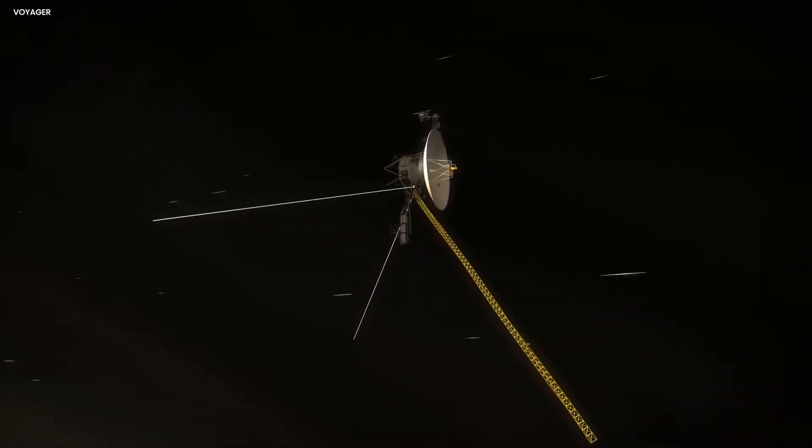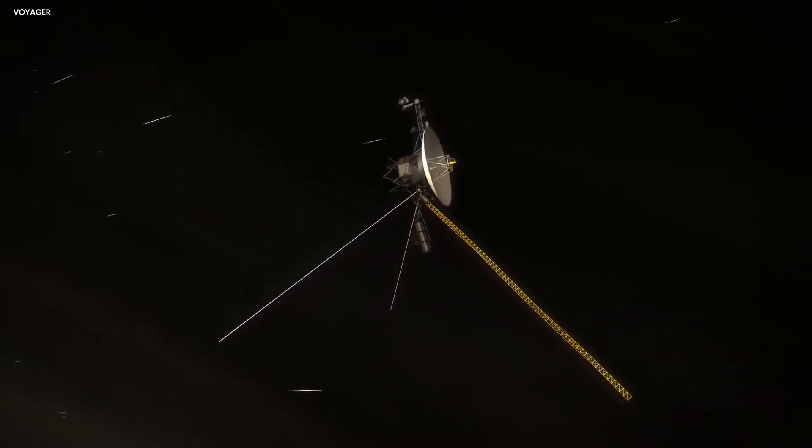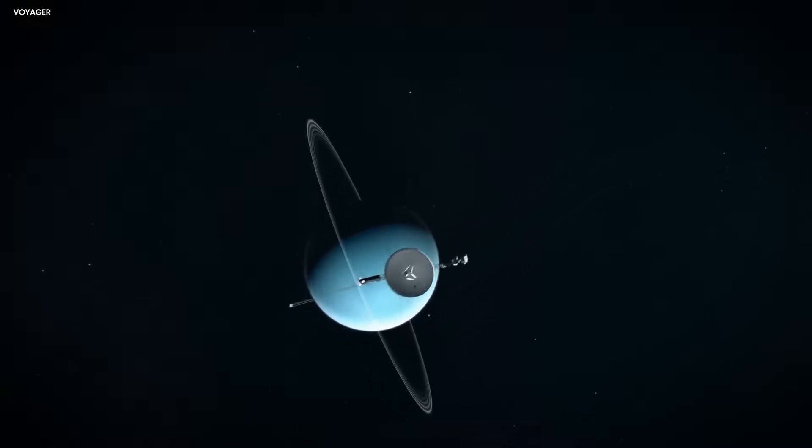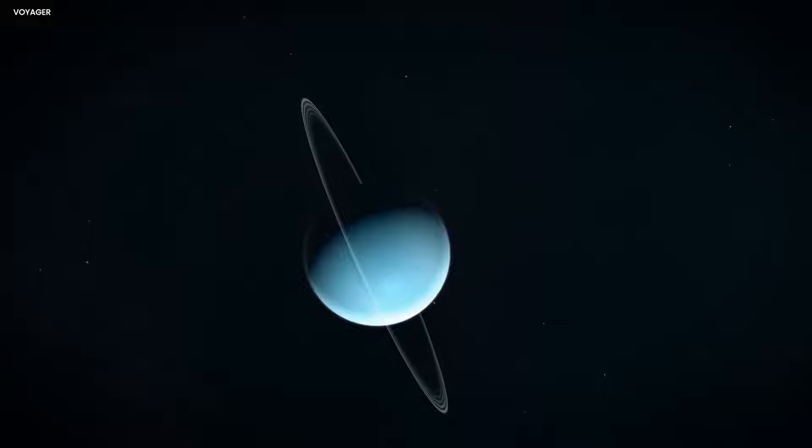Even if there are more irregularities, Voyager 1 is in good hands. It also helps that it's equipped with redundant systems in case the primary ones fail. These systems were of immense help in 2017 when Voyager 1 encountered another technical issue.